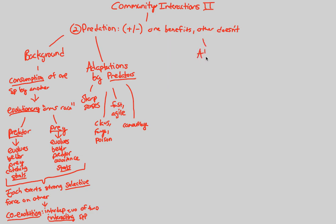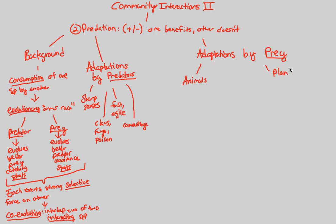Prey evolved. We're going to look at the adaptations that prey has developed. These are quite interesting to us as people studying community ecology because these show very advanced evolutionary concepts and evolutionary results. Focusing on adaptations by prey — we'll be looking at animal adaptations, and we'll also be looking at the adaptations that plants are able to do on the side a little bit later.